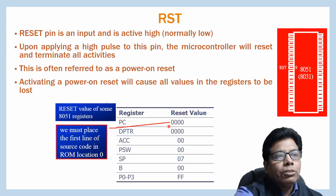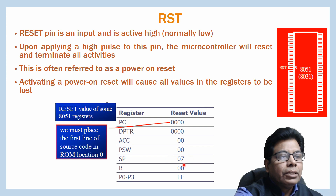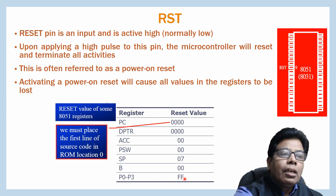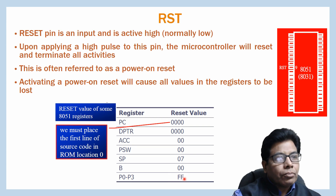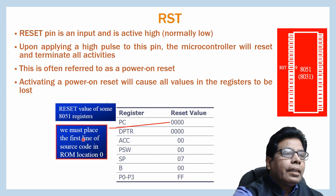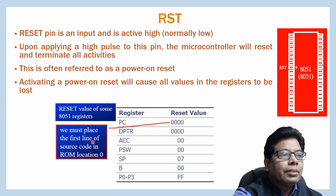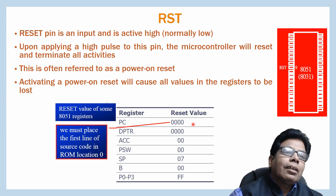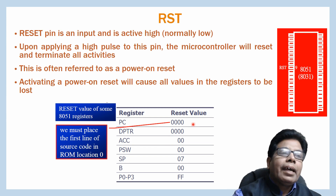The register values after reset are as follows: PC will be 0000, DPTR will be 0000, accumulator will be 00, PSW is 00, stack pointer is 07, B register is 00, and all ports P0 to P3 will have FF on their pins. For the PC, we must place the first line of source code in ROM location 0000, so after every reset it will go to that location and execute the program from there.